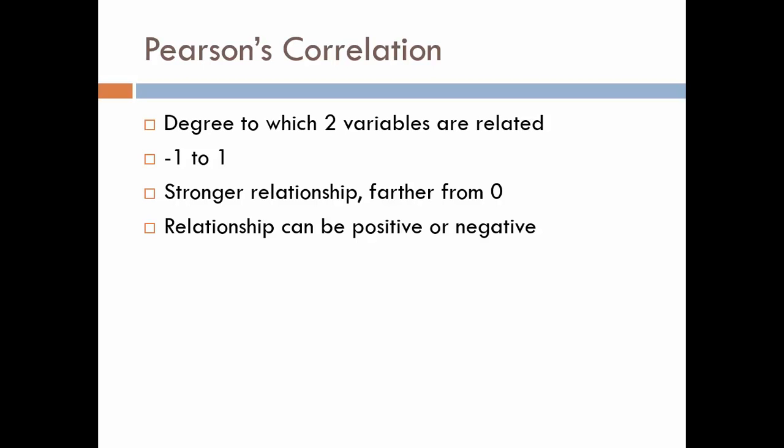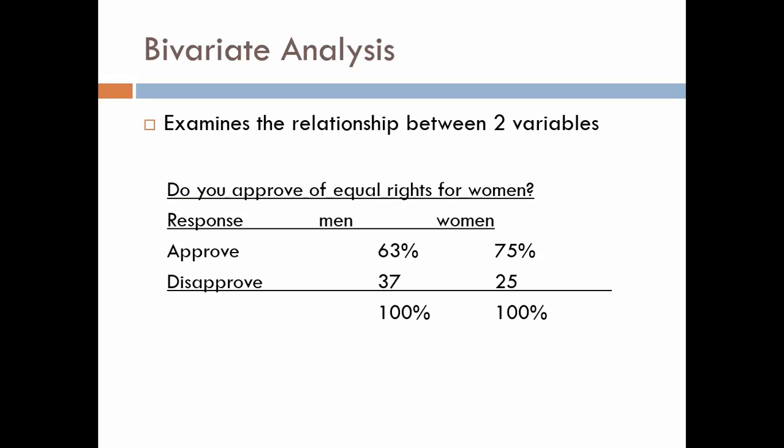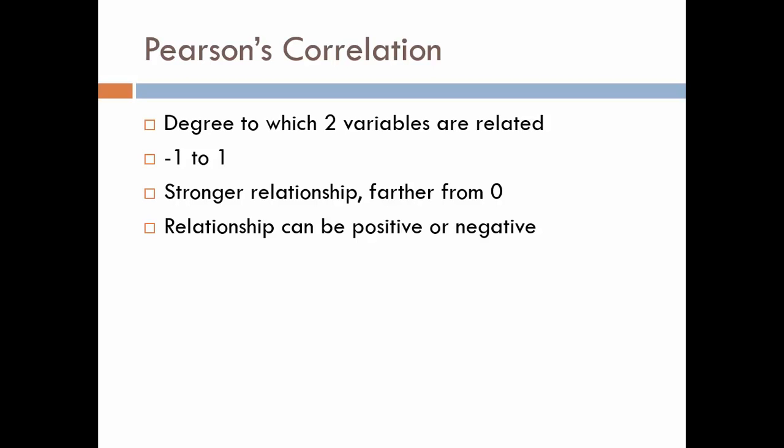A Pearson's correlation is another way of looking at relationships. But let's back up for just a second. With this chi-square, if you look at this, these are categories — approve and disapprove are categories, and gender, men and women, those are categories. So when we're looking at the relationship between two categorical variables, we want to do a chi-square. That's why we needed to look at what level of measurement our variables were measured at. Because if they're categorical — nominal or ordinal — we do a bivariate chi-square analysis. If they're not categorical, if they're continuous — interval or ratio — we can do a Pearson's correlation.